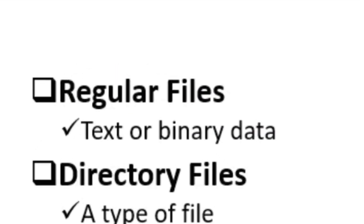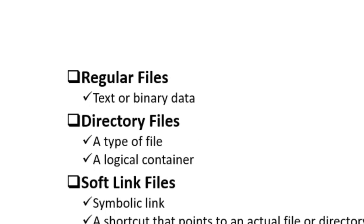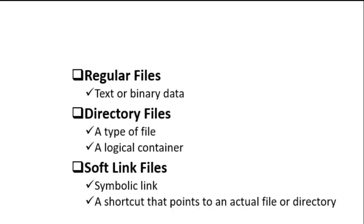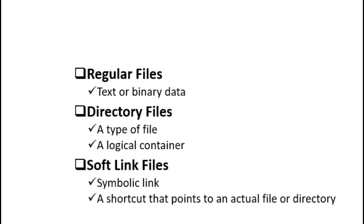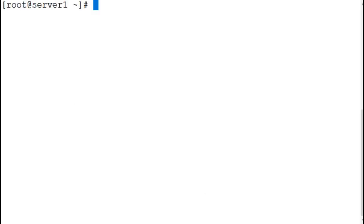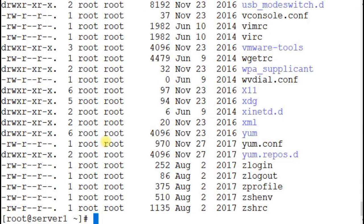A regular file, also known as an ordinary file, may contain text or binary data. This type of file may be a shell script, an executable program, a Python playbook, a configuration file, or a Linux command in an unreadable format. This is the most common file type you'll find and work with in Linux. The long output of the `ls` command shows a hyphen character at the beginning of line entries to identify files as regular files.